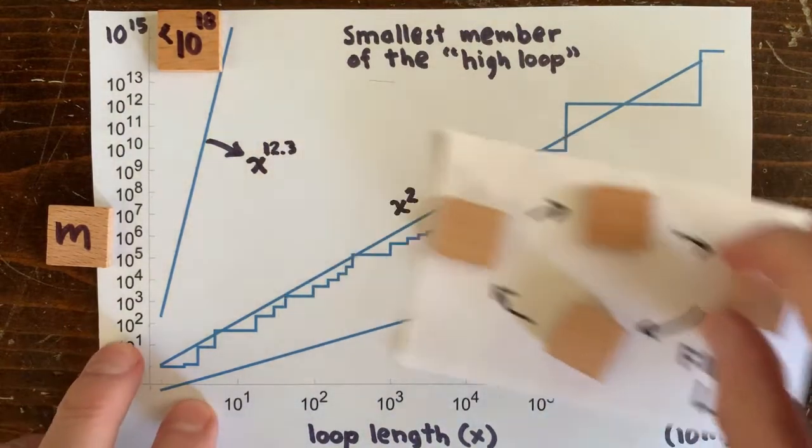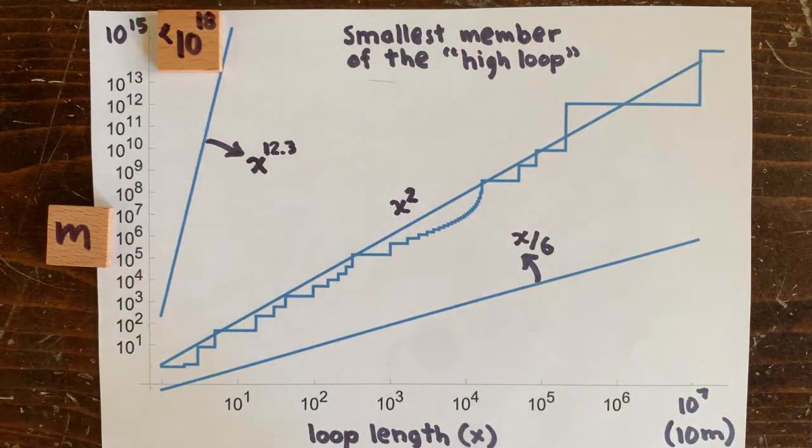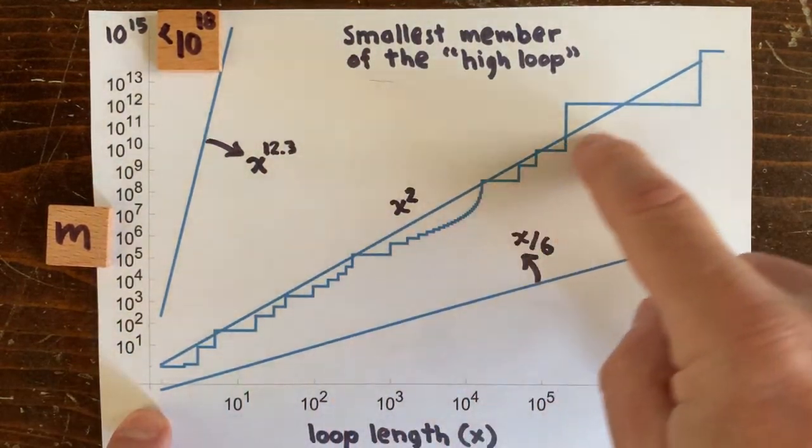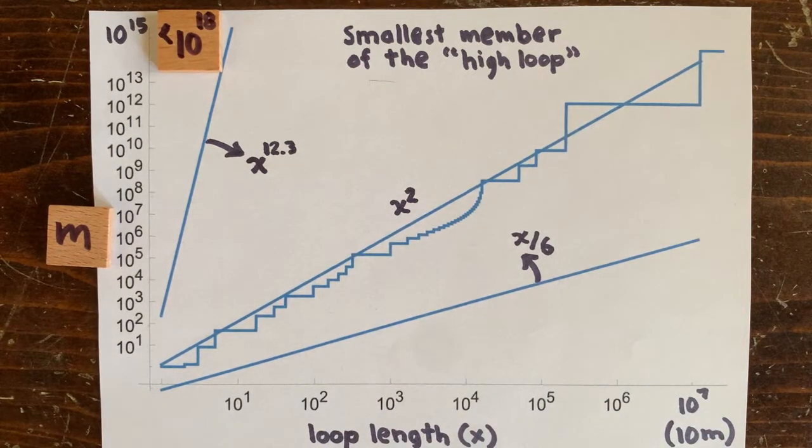How about these other lines on the chart? Well, the jagged line is kind of hard to characterize because that denominator is so chaotic. But thanks to the work of Alan Baker and other mathematicians, we can say a little bit about how high these high loops can go.